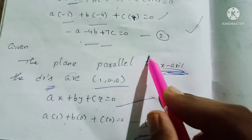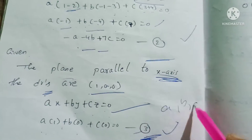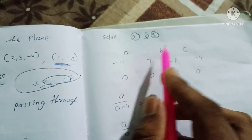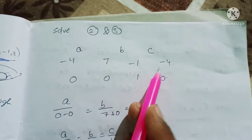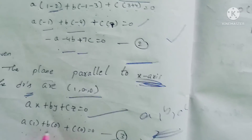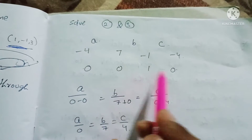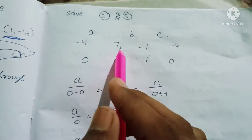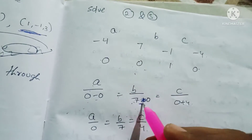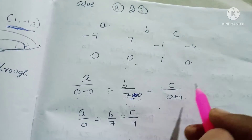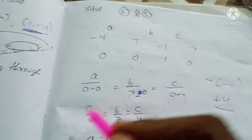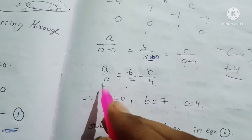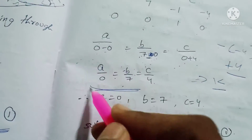The second and third equations are now solved. Solving for a, b, c using the determinant method with rows (−1, −4, 7) and (1, 0, 0): a/(−4·0 − 7·0) = b/(7·1 − 0·(−1)) = c/(−1·0 − (−4)·1), giving a/0 = b/7 = c/4. Therefore a = 0, b = 7, c = 4.